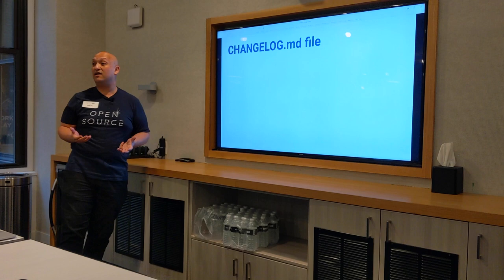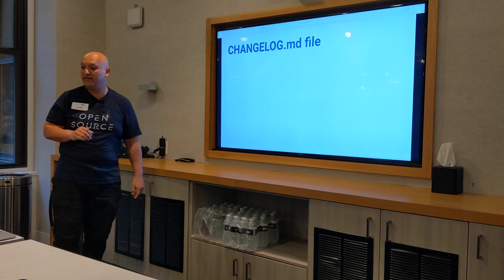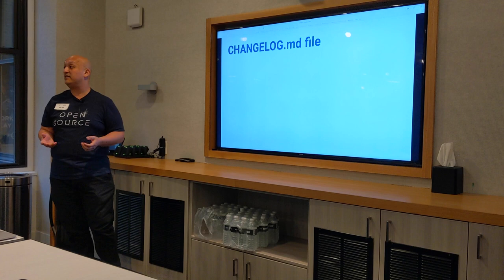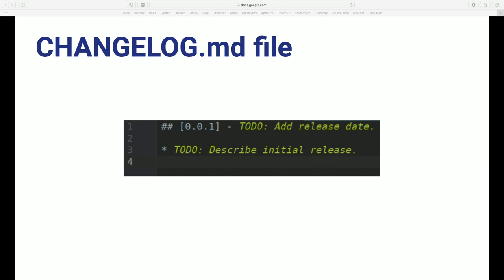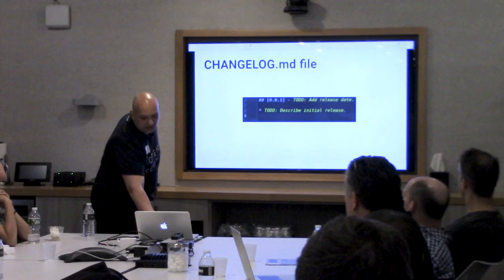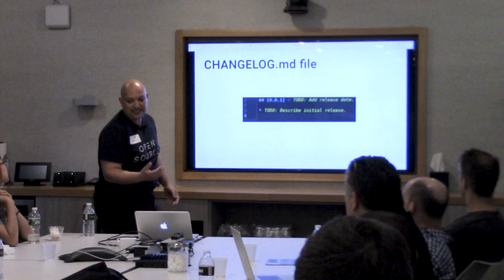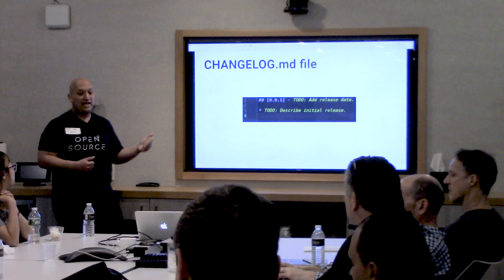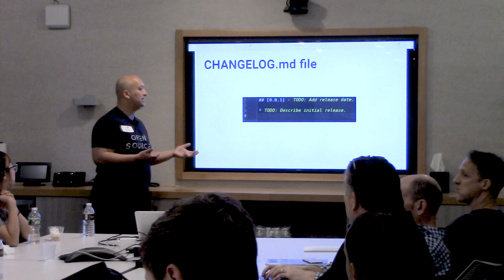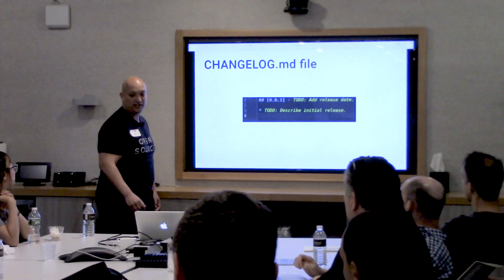There are some files that would be great if you added content to. For example, the changelog.md file is a way for developers to document the changes made from every new release of a semantic version. By default, the IDE creates that file with a number of to-dos left open for completion. You can update it — add a release date, describe the initial release. Note that the semantic version 0.0.1 default is not consistent with what we have in our pubspec.yaml file, so update those values and add content describing the new features you're adding in this release.